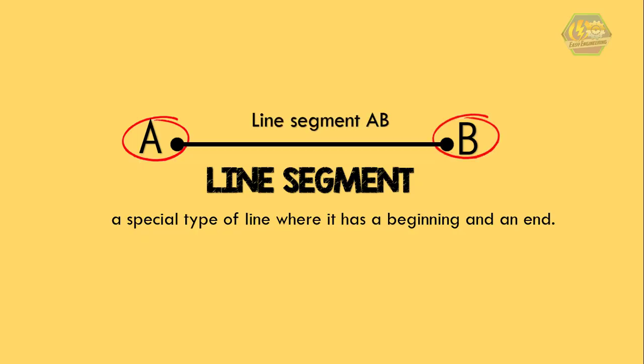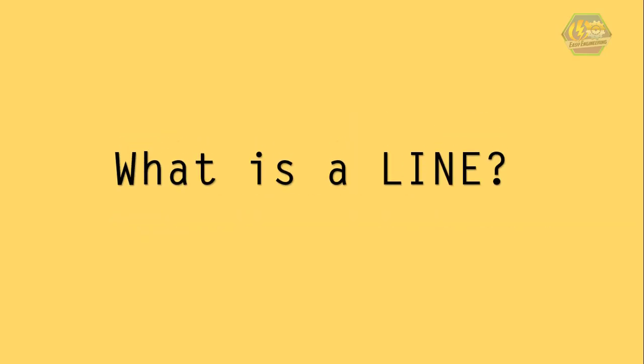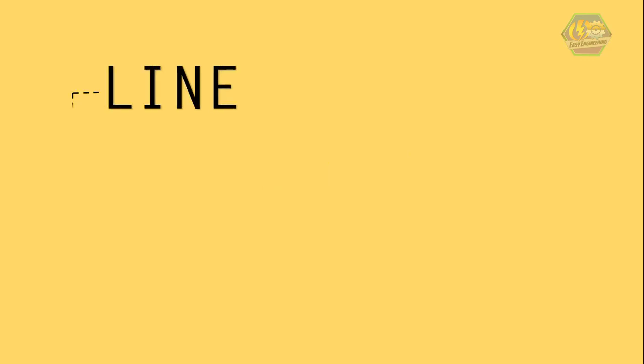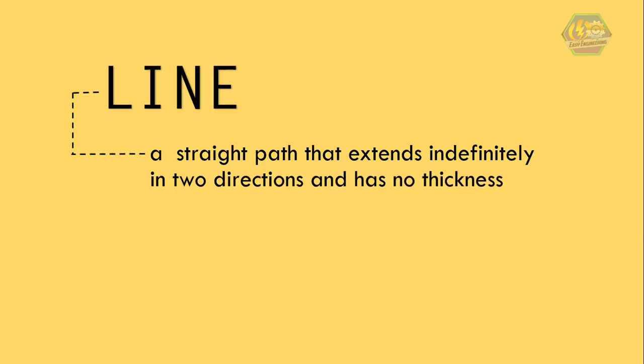So if this is called a line segment, then what is a line? A line is a straight path that extends indefinitely in two directions and has no thickness. It is the next most basic element in geometry. Line extends indefinitely, meaning it extends forever into two directions. But we cannot draw a line that goes indefinitely, so to draw a line, all you have to do is pass the endpoints a little bit and then draw arrows on both ends to show that it keeps on going.